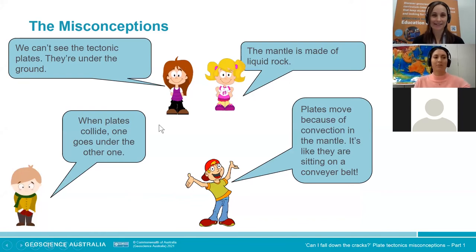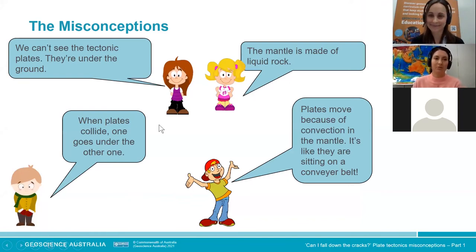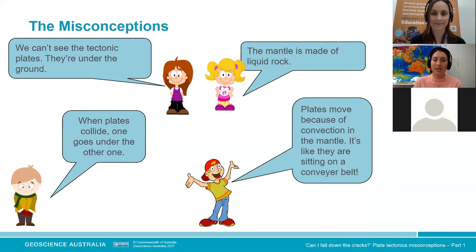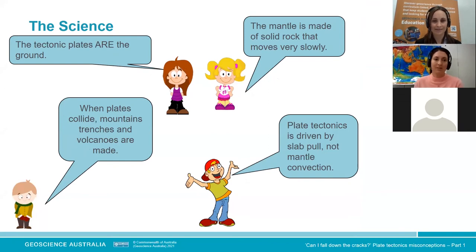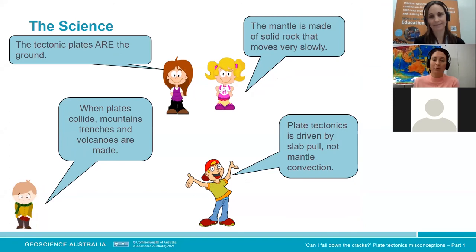To sum up, our students came in saying: we can't see the plates; when they collide, one goes under the other; the mantle is made of liquid rock; and the plates move because they're on a conveyor belt. But now they know: the tectonic plates are the ground; when plates collide, mountains, trenches and volcanoes are made; the mantle is actually more solid rock that moves very slowly — solid state movement; and plate tectonics is driven by slab pull, not by mantle convection.